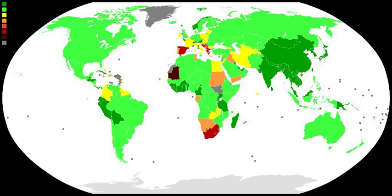This is a list of countries by unemployment rate. Methods of calculation and presentation of unemployment rate vary from country to country. Some countries count insured unemployed only, some count those in receipt of welfare benefit only, some count the disabled and other permanently unemployable people, some count those who choose not to work, supported by their spouses and caring for a family, some count students at college and so on. There may also be differences in the minimum requirements, and some consider people employed even if only marginally associated with the employment market — for example, working only one hour per week.